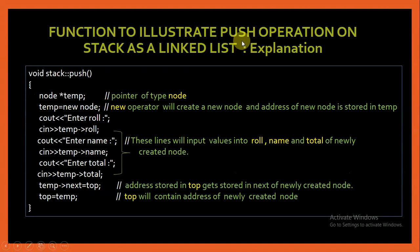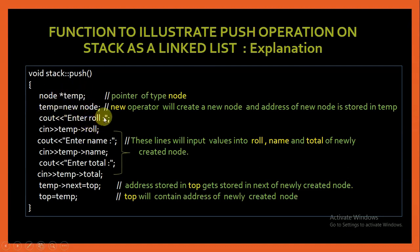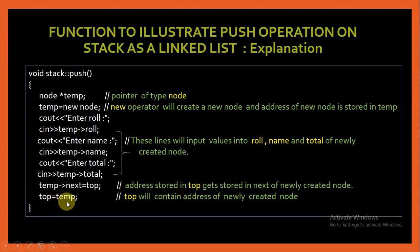Now let us understand the push operation in detail. In the push operation, I declare a pointer of type node — node star temp. Using the new operator, I create a new node of node type and its address is stored in temp. Then using input statements, I store data — role number, name, and total — in the data field of the temporary node. In the next field of this temporary node, I store the address currently held in top. Then top is assigned the address of the newly created node.